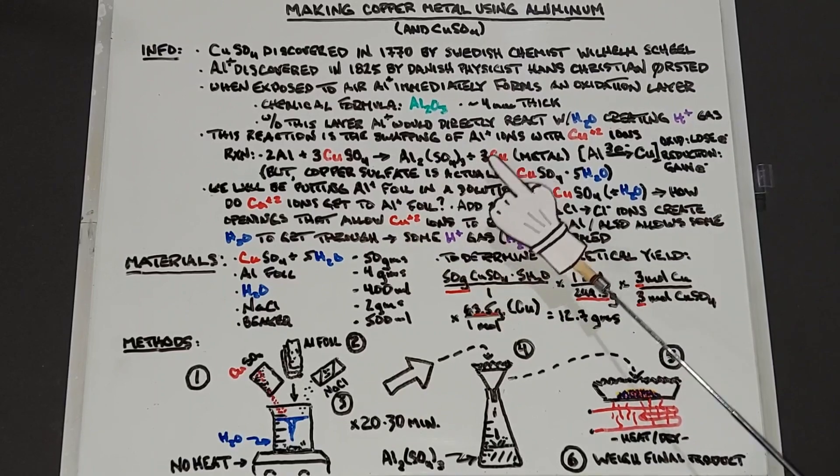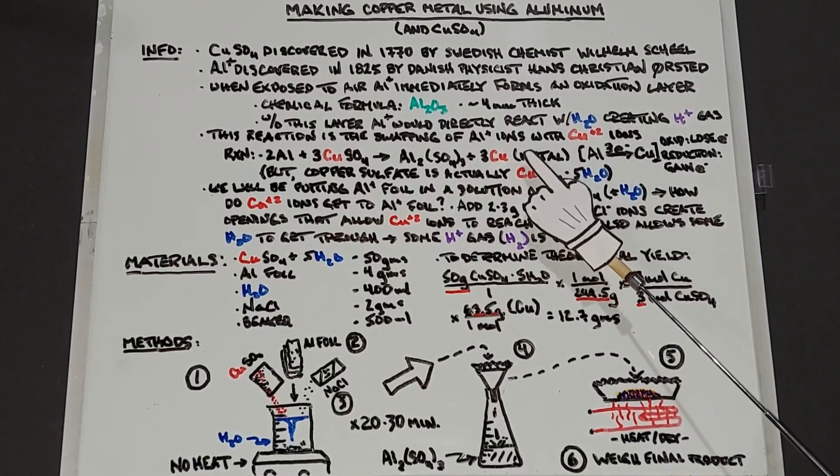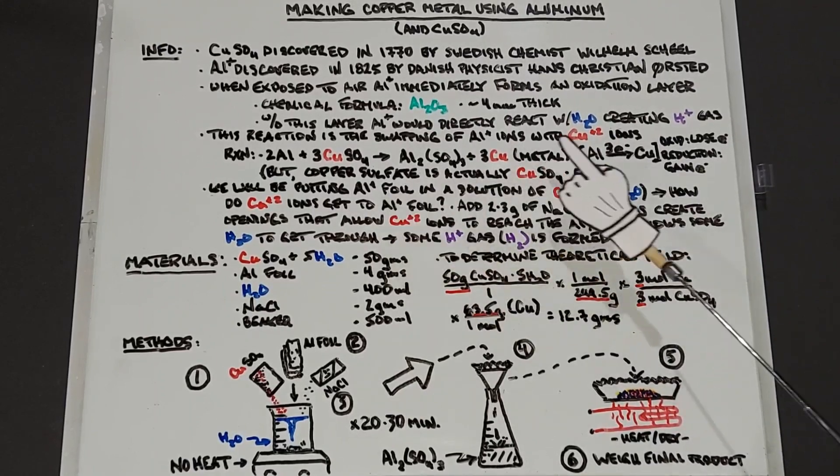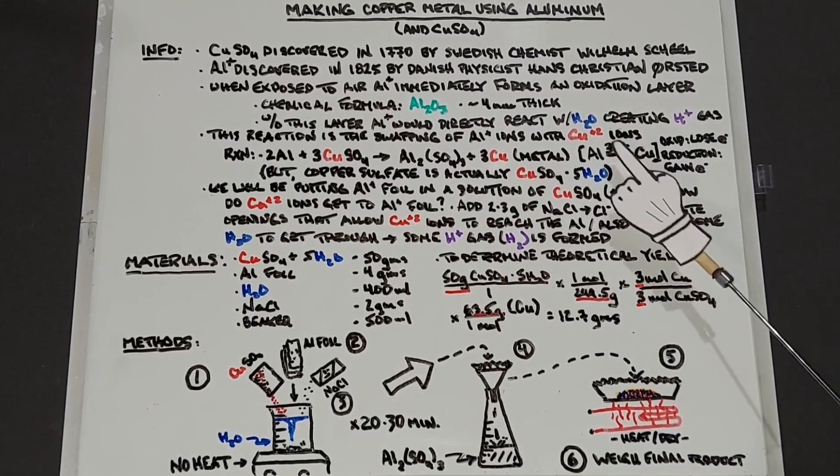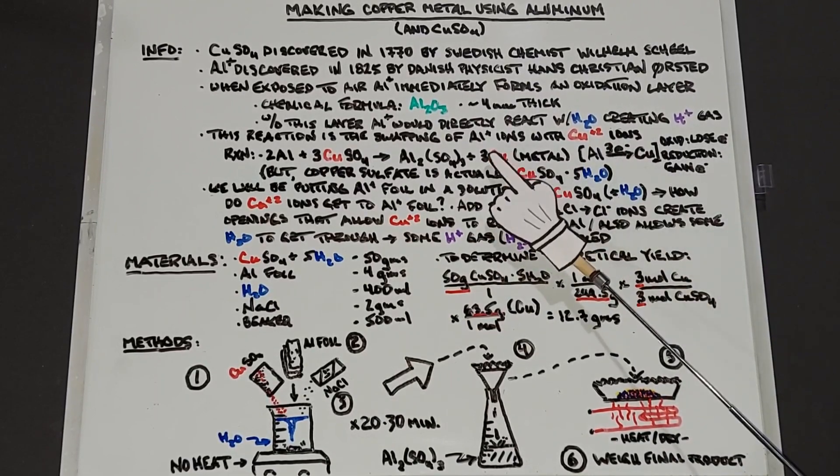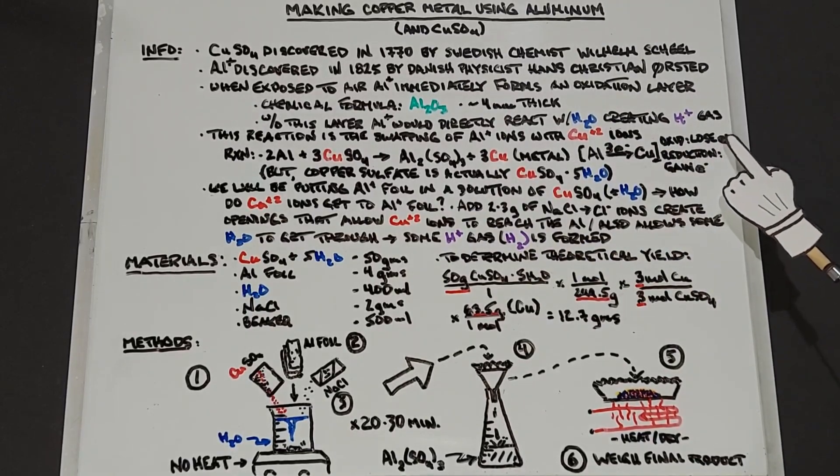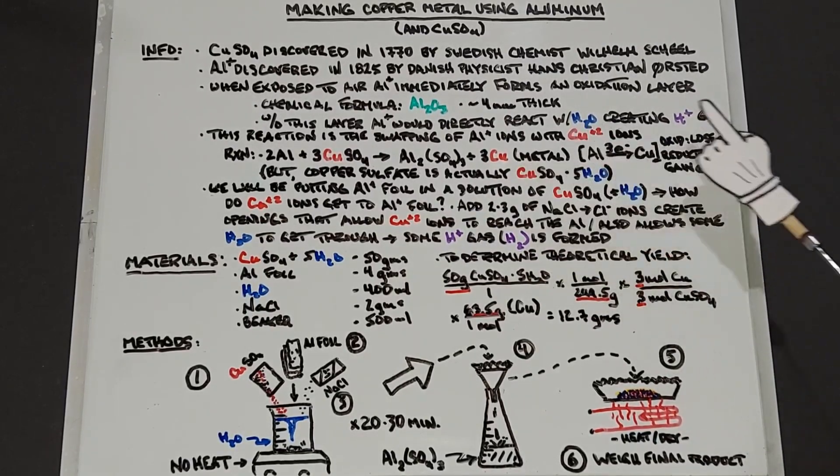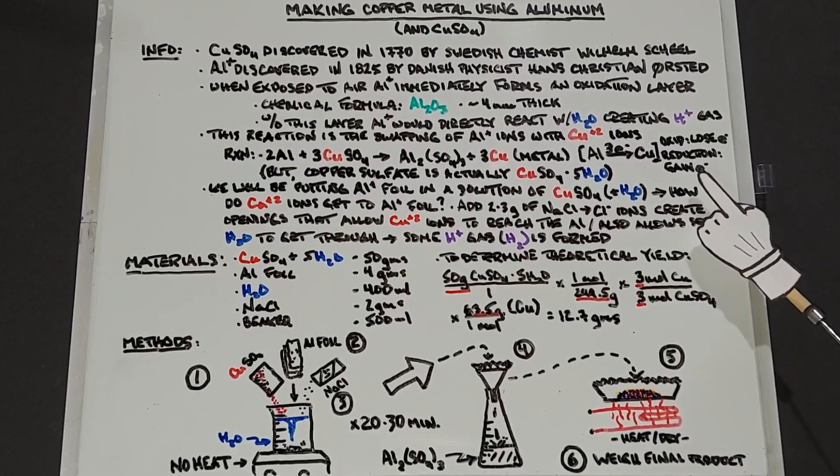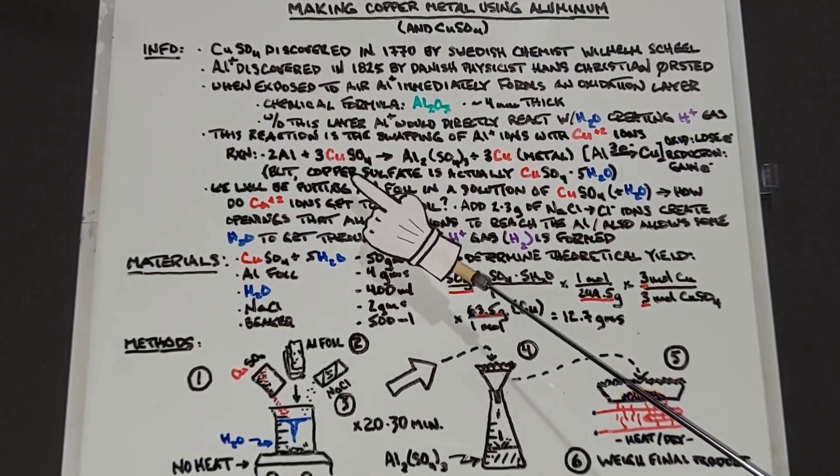Plus 3Cu, and this is copper metal. In this reaction the aluminum is giving the copper three electrons, which is why it comes out as a metal. So the aluminum is being oxidized because it's losing electrons. The copper is being reduced because it's gaining electrons.